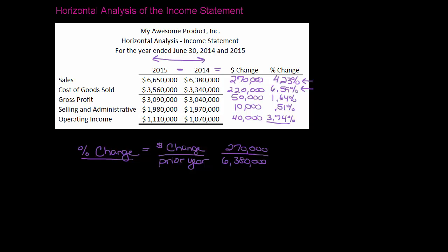So what does this tell me? This tells me that there were either issues with the cost of production. Maybe as sales went up they had people working overtime, or they had to have materials shipped more quickly. Maybe the cost of material went up, or the cost of labor went up. So this is something I would want to take a look at — I want to know why this increase is 2 percent more than the increase in sales. These are the kind of things you see when you do a percent change that you don't necessarily see when you do a dollar change.